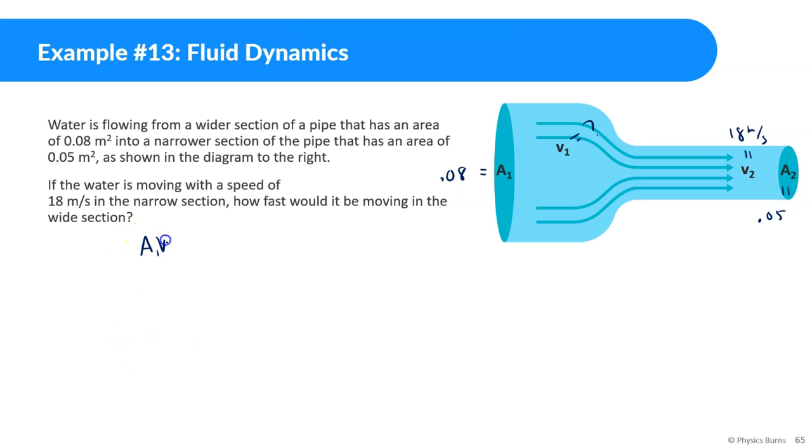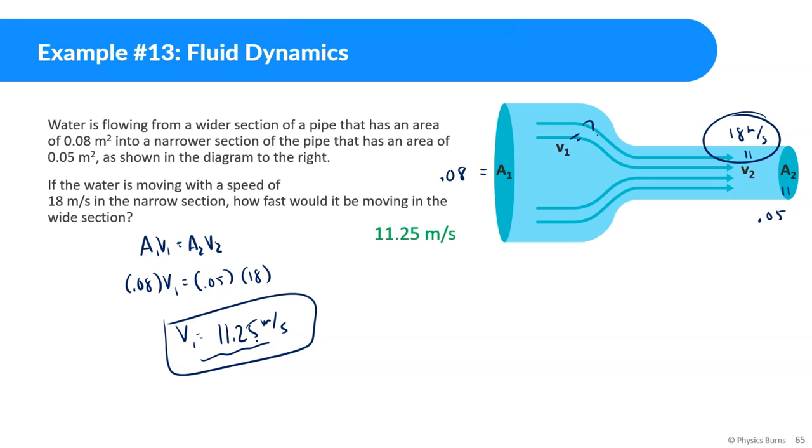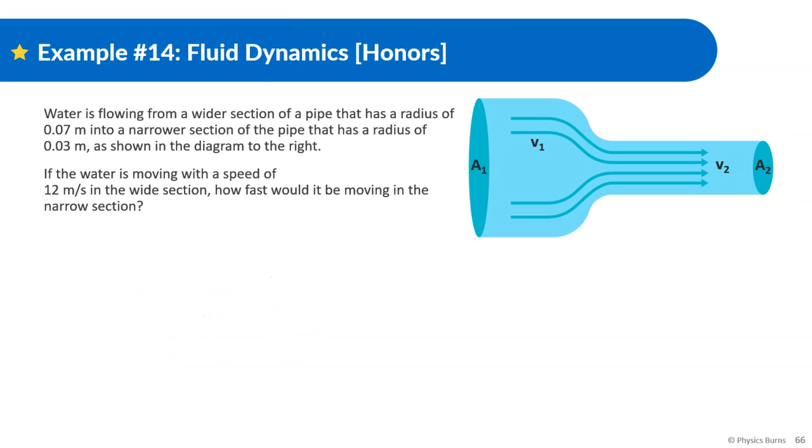So we should know A1v1 is equal to A2v2. A1 is 0.08, v1 is what we're looking for. A2 is 0.05, v2 is 18. Shouldn't be too bad. Just put into our calculator, 18 times 0.05 divided by 0.08 and we get 11.25 meters per second. One way we could check this is in the narrow section, it's going faster. So it looks promising. There you go. I think last one for this.